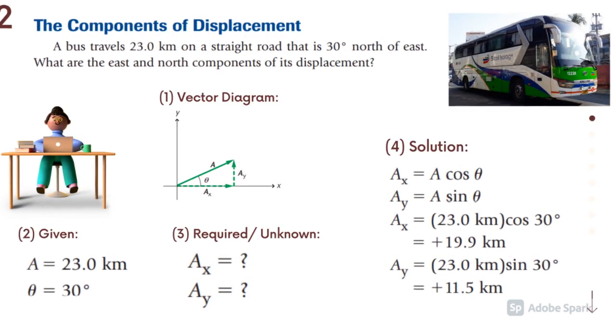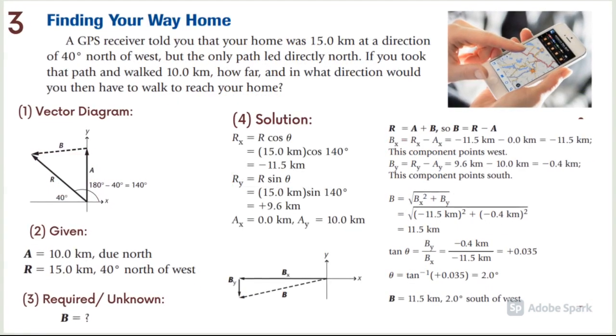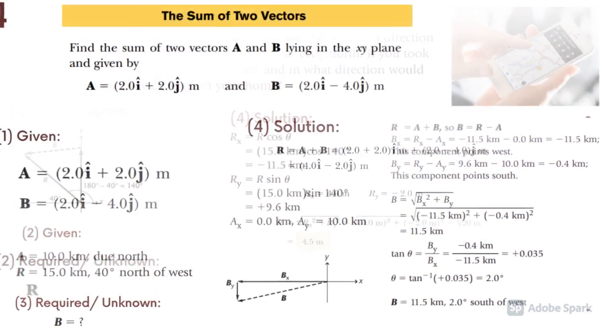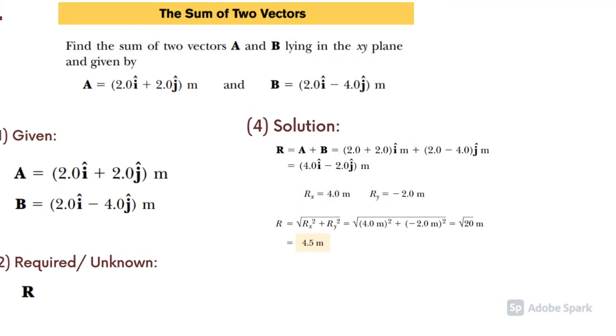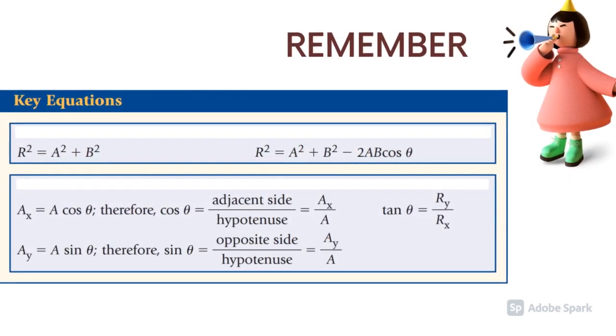Problem number two is an example of a component vector. Problem number three is about finding the magnitude and direction of a known vector. Example problem number four, using the unit vector. Remember the following equations.